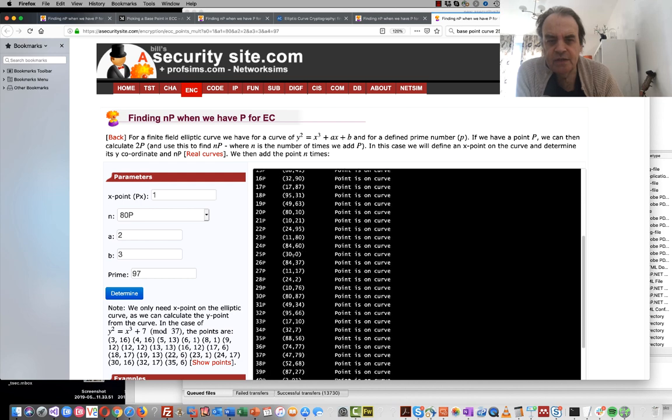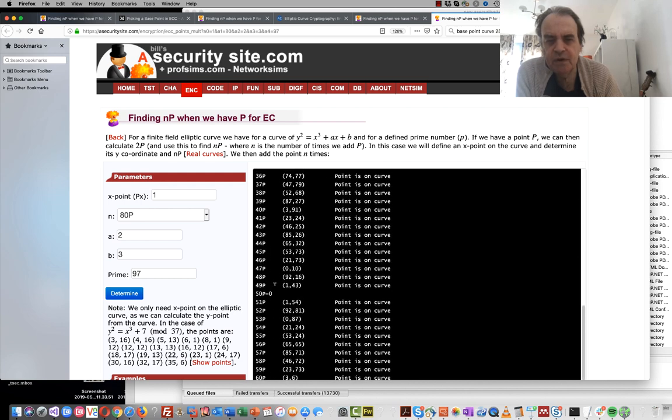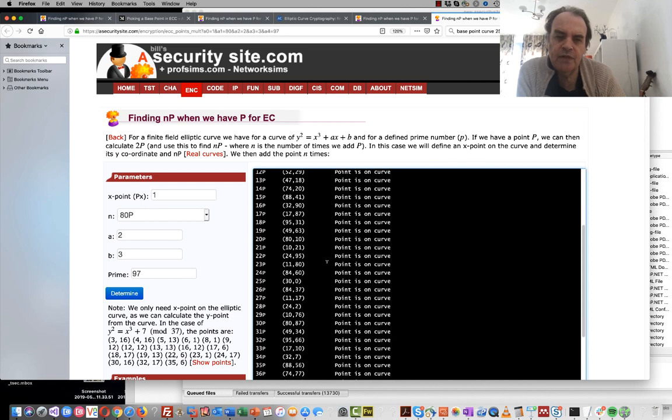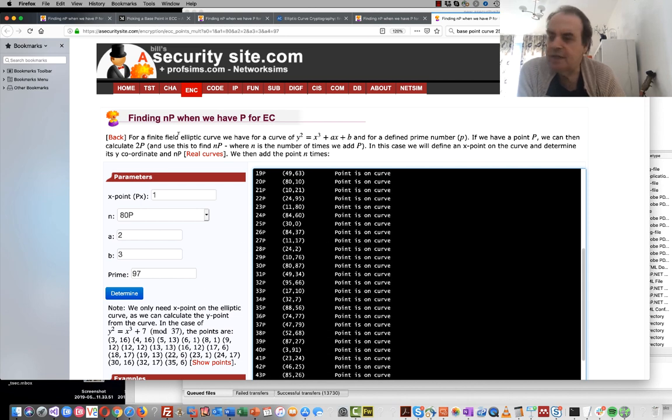In this case, we have a suborder group of 50. So after 50 it starts to repeat. So we now have more points that we can use. So this is a better base point than we had before.